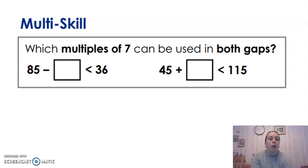Maths hat on. Which multiples of 7 can be used in both gaps? 85 take away something is less than 36. 45 add something is less than 115.